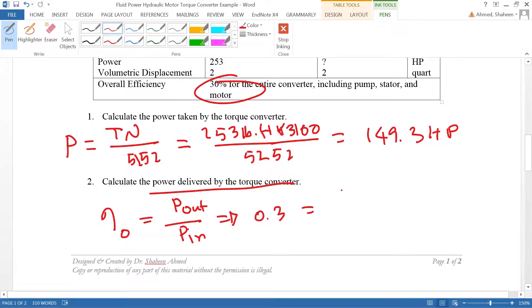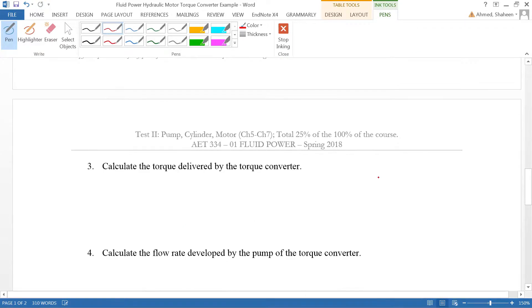Power out we can calculate by the input which is 149.3 horsepower. I have calculated the power out is 44.8 horsepower. Now let's go to the next question: calculate the torque delivered by the torque converter.